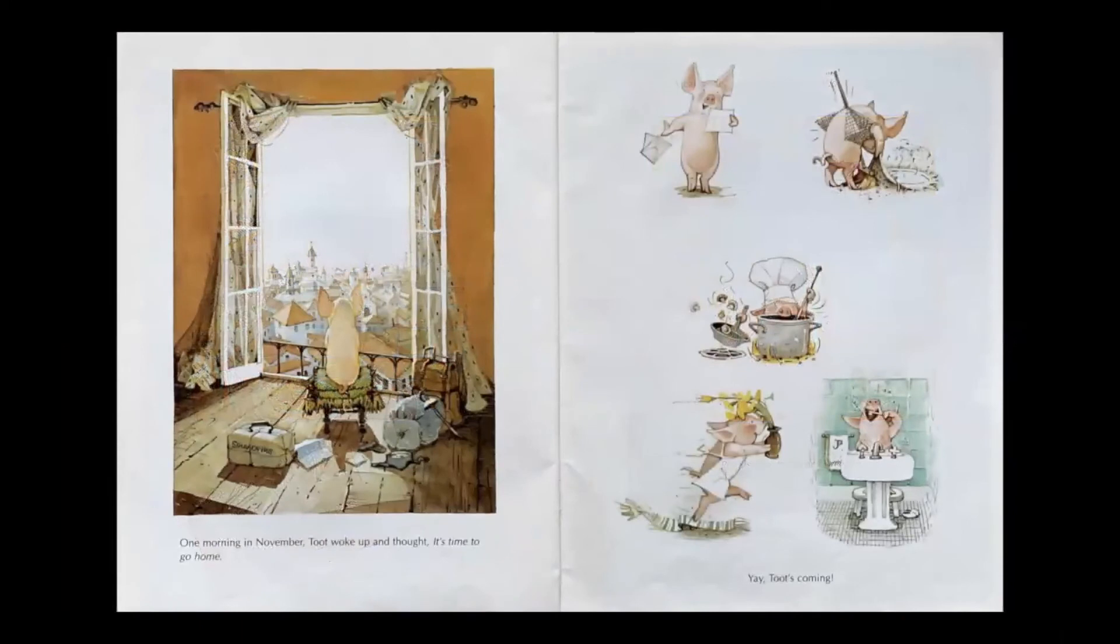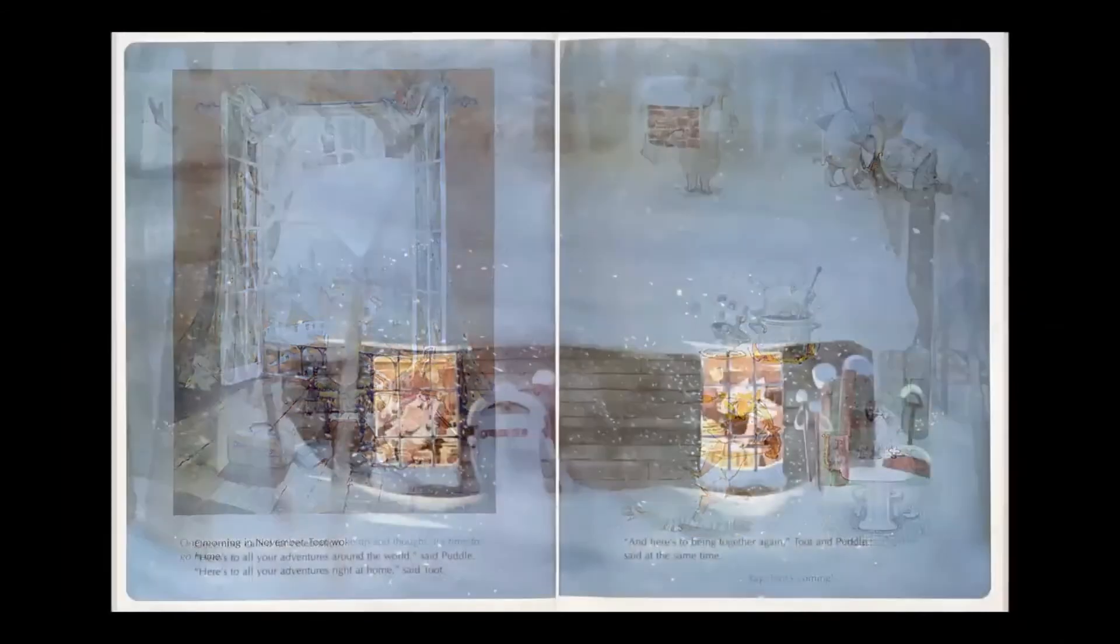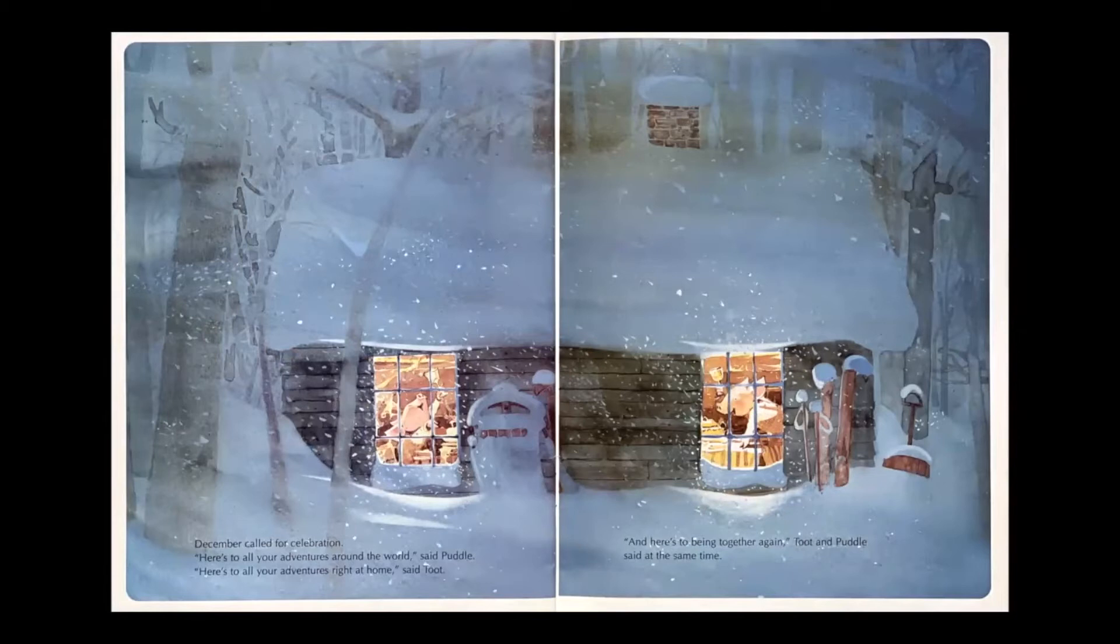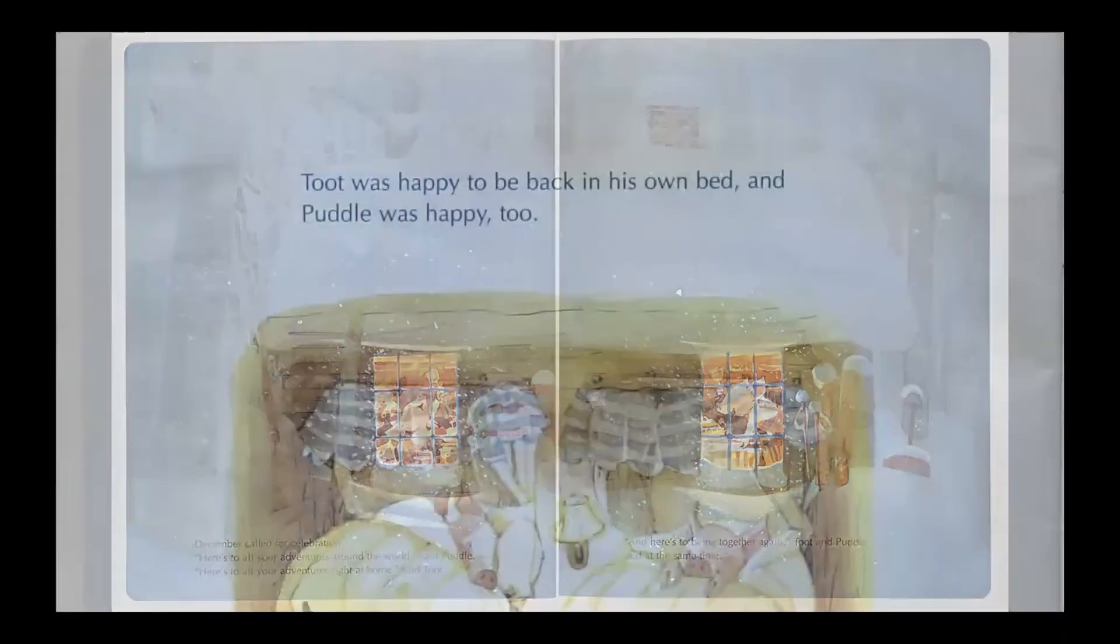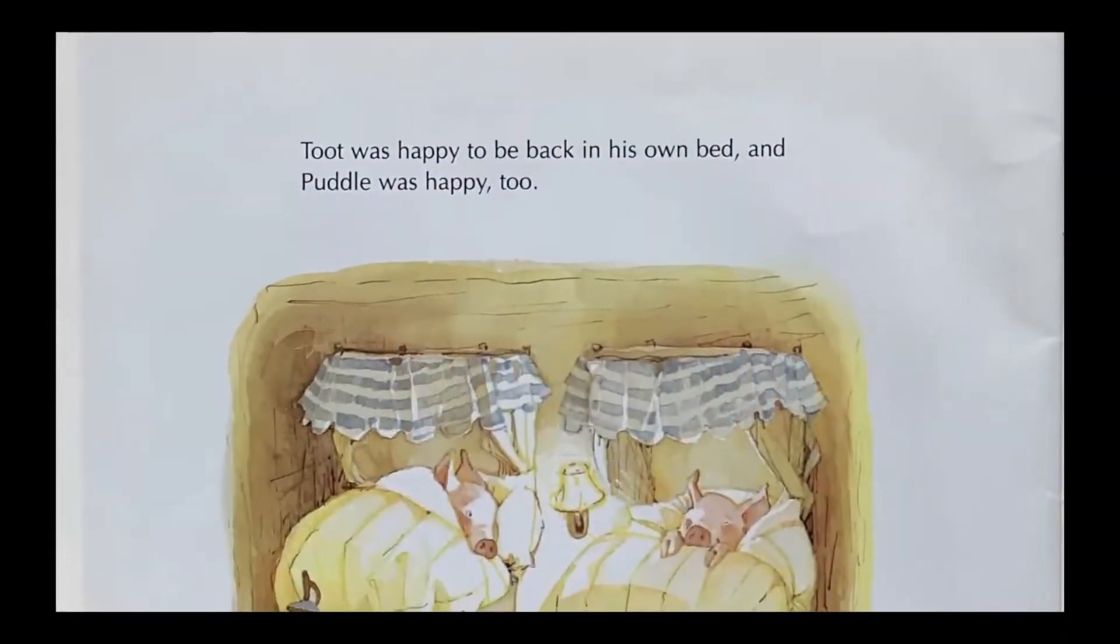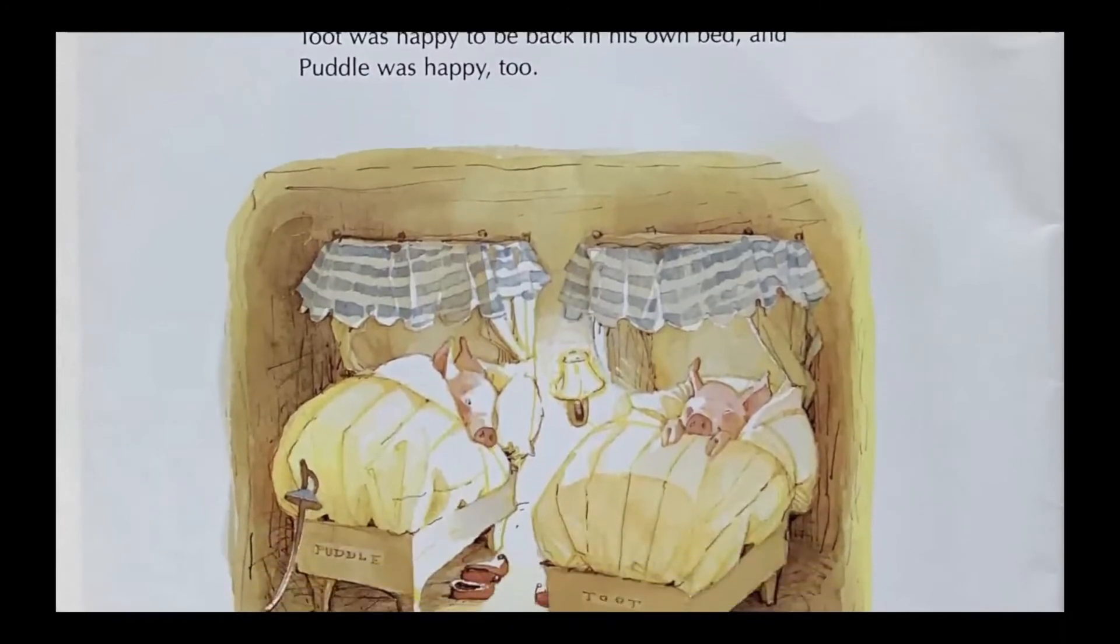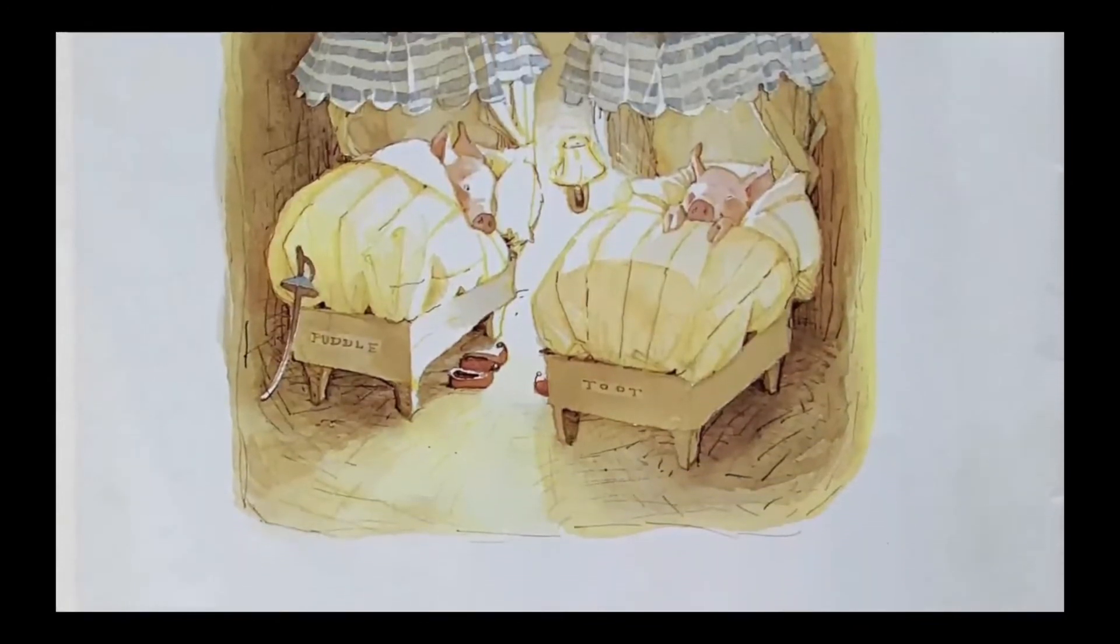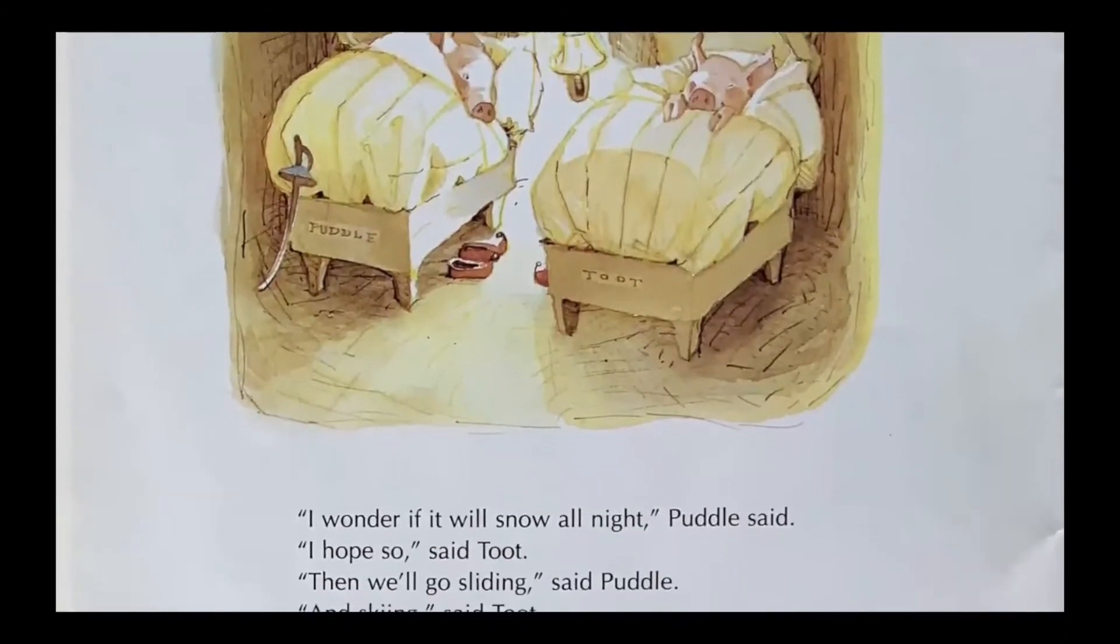One morning in November, Toot woke up and thought, it's time to go home. Toot's coming! December called for celebration. Here's to all of your adventures around the world, said Puddle. Here's to all of your adventures right at home, said Toot. And here's to being together again, Toot and Puddle said at the same time. Toot was happy to be back in his own bed, and Puddle was happy too.